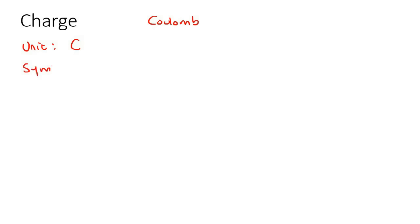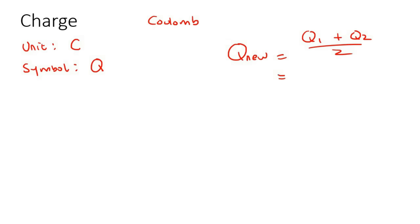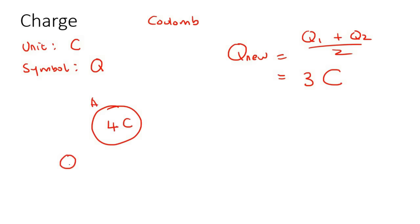The symbol is a big Q. So when you use that formula, Q_new equals the first charge plus the second charge divided by two. When you give the answer - let's say the answer is three - you would say three coulombs, because that is the unit. So the charge of A equals four coulombs.